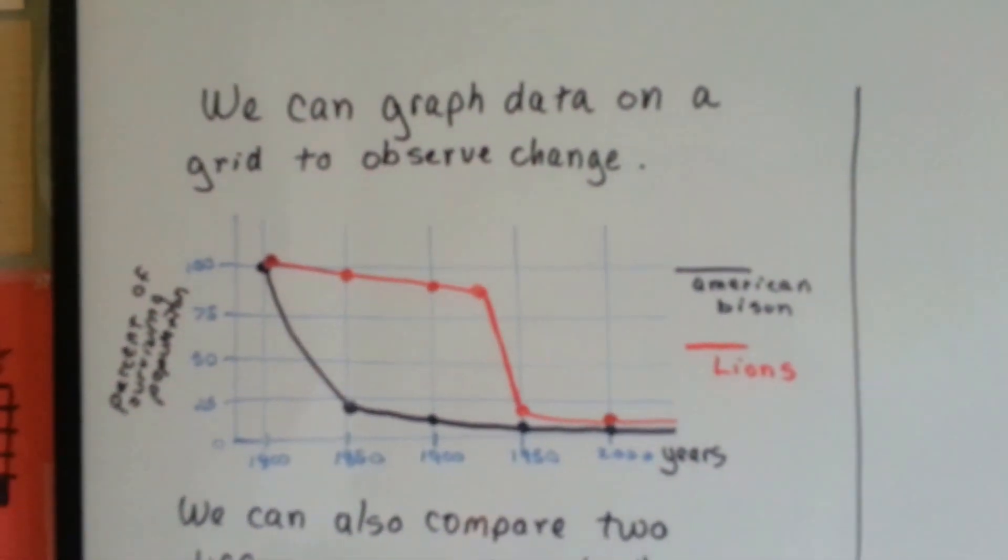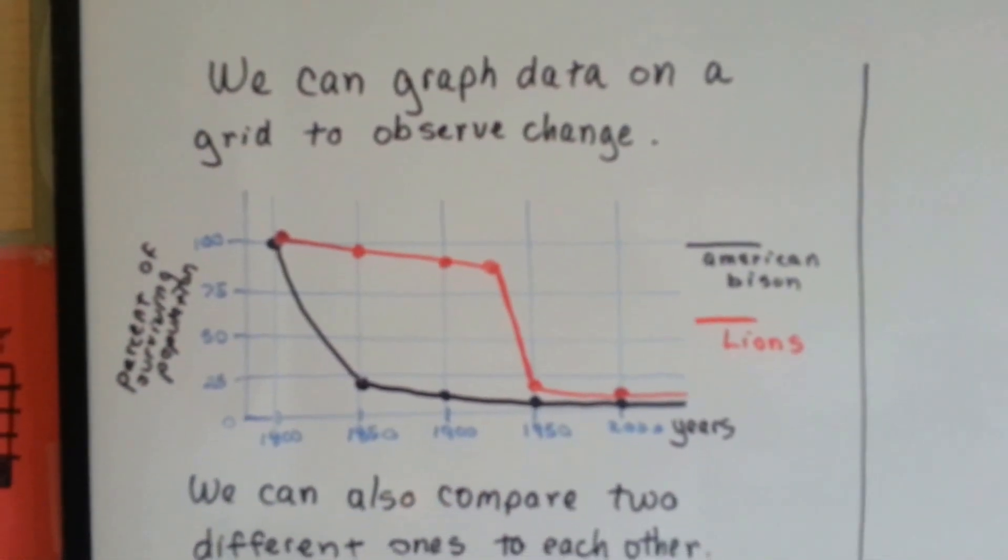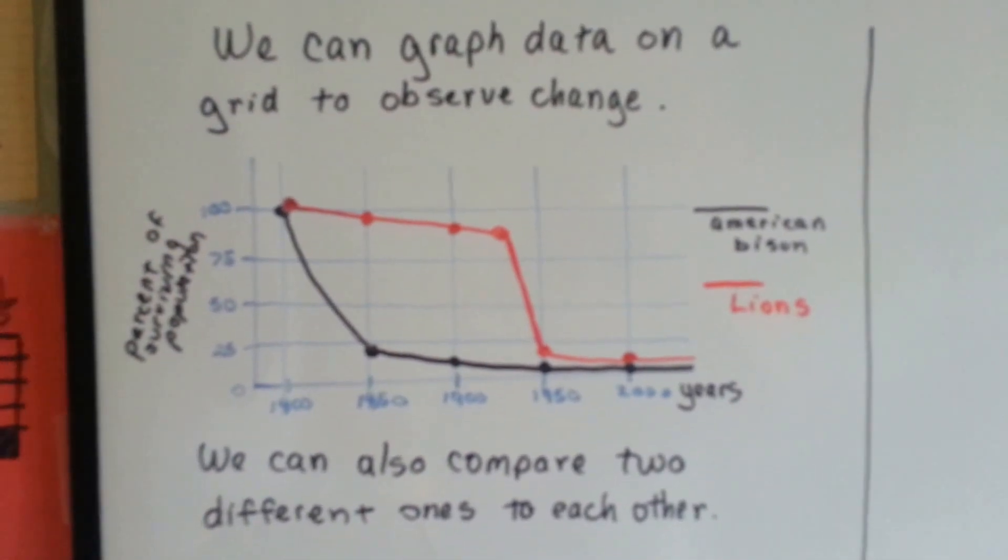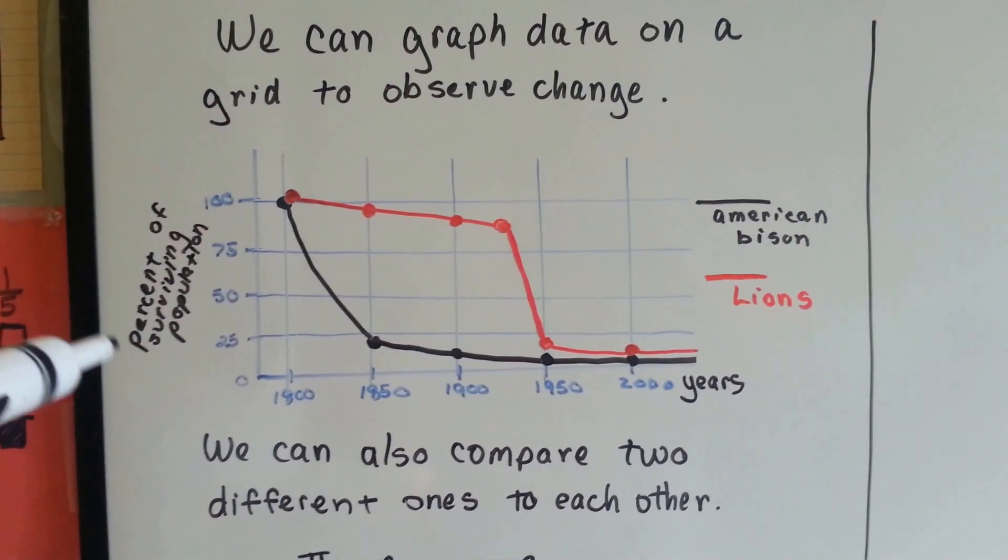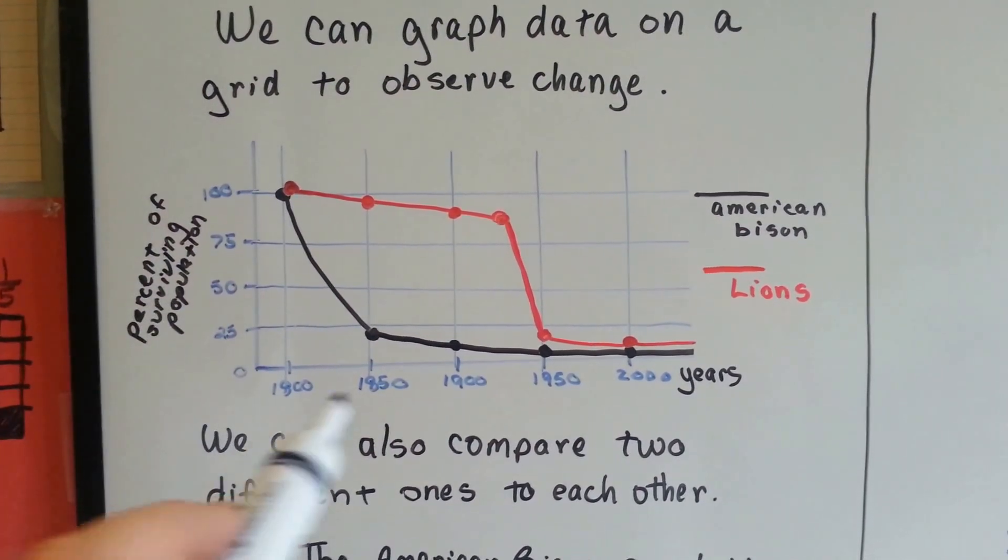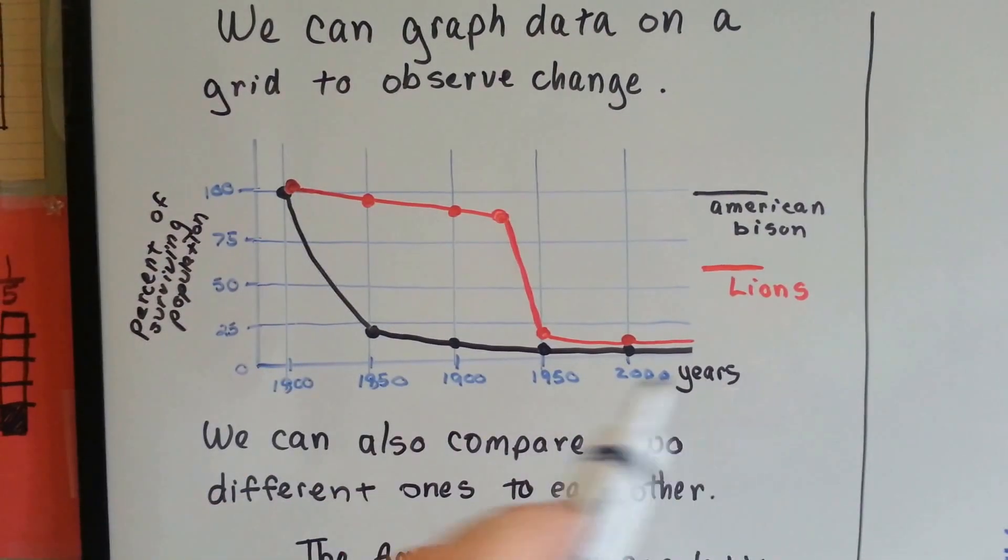As we saw in our last video, we can graph data on a grid to observe change. So we saw the population of surviving animals, wildlife, against the years that have gone by.